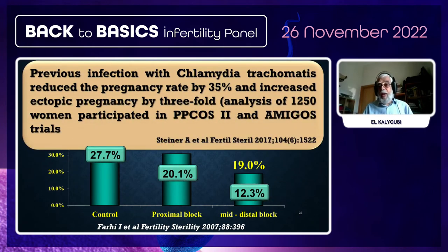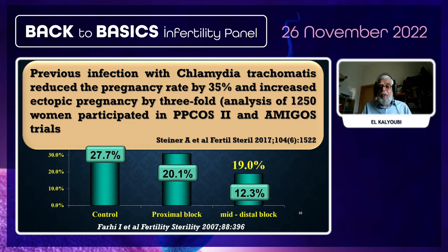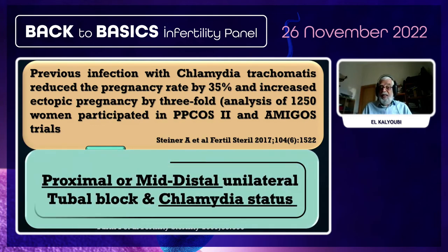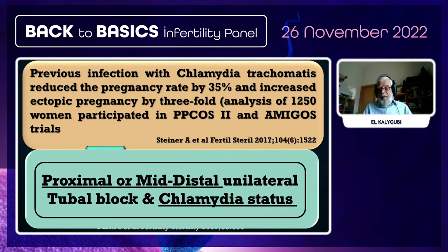An important study — the AMIGOS study published in 2017 in F&S — showed that pregnancy rate is reduced by 35% in patients with positive chlamydia serology. If recalculated, one tubal block with positive chlamydia means the maximum achievable pregnancy rate is about 20%. Therefore, all patients presenting with one tubal block need chlamydia status testing. I carefully define the exact location of the tubal block on x-ray for prognosis and order chlamydia testing before counseling patients on further management.